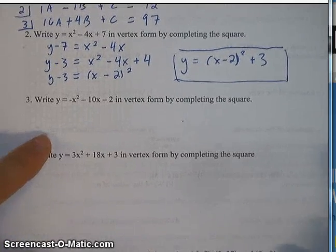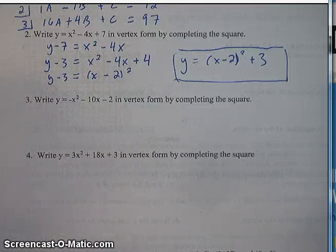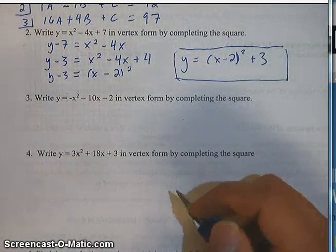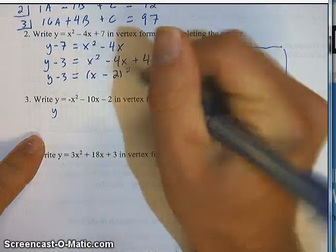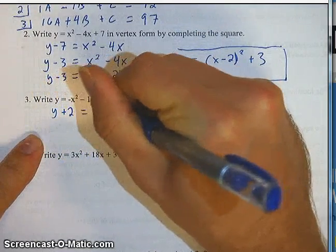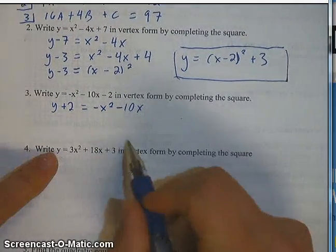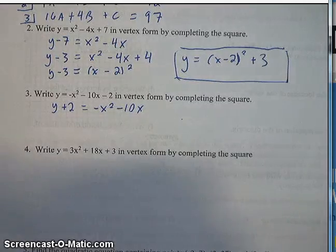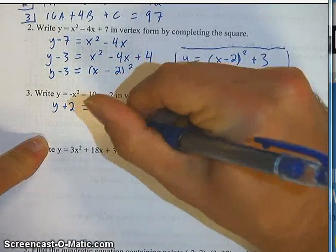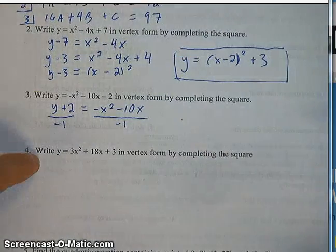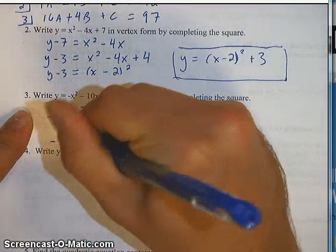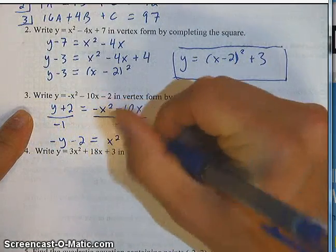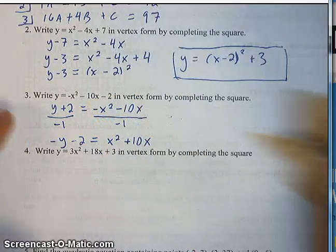Number 3 is the exact same question, just with different numbers. Write y equals negative x squared minus 10x minus 2 in vertex form. The only difference is there's a negative in front of the x squared, but the first step is always the same — get that negative 2 on the other side: y plus 2 equals negative x squared minus 10x. I don't like that negative in front of the x squared because I won't be able to make a perfect square trinomial, so I'm going to divide everything by negative 1. The effect is it changes the sign on all four terms, making it negative y minus 2 equals x squared plus 10x.